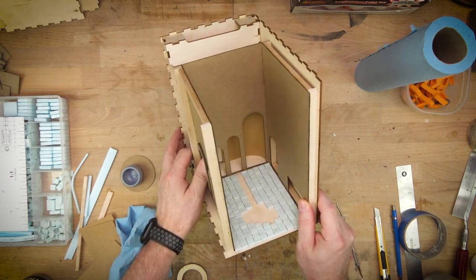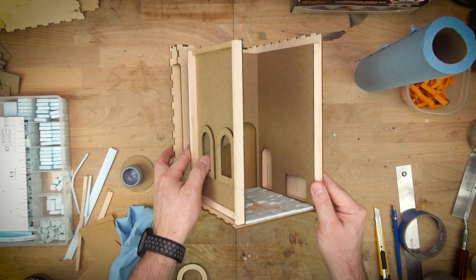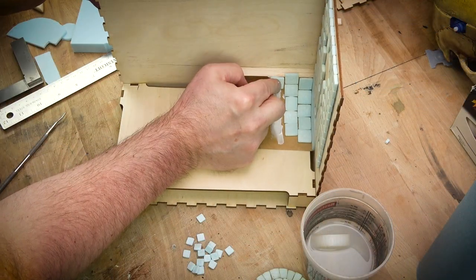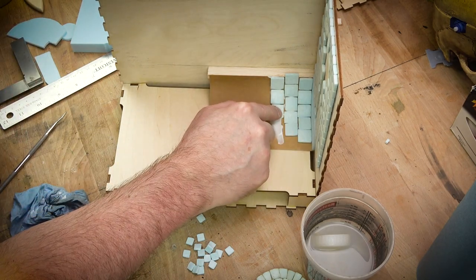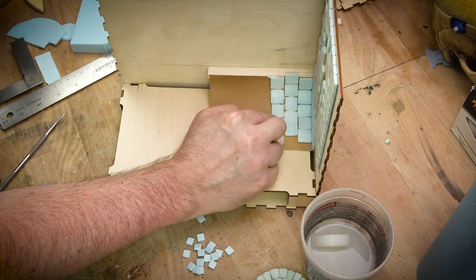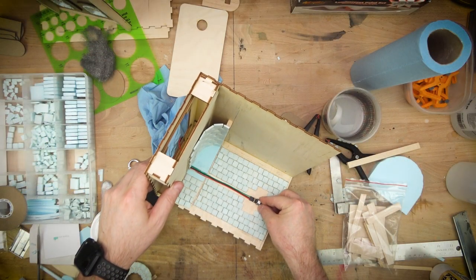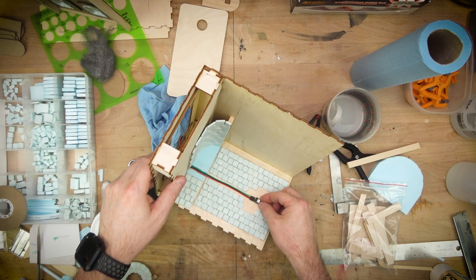All of the stonework is regular insulation foam, and I cut it on a hot wire cutter. You could use a utility knife just as easily. Then I put it in a container with some big bolts and just shake those around to rough them up.